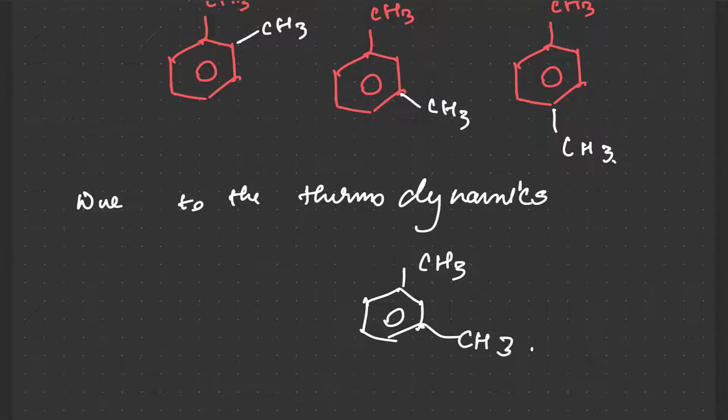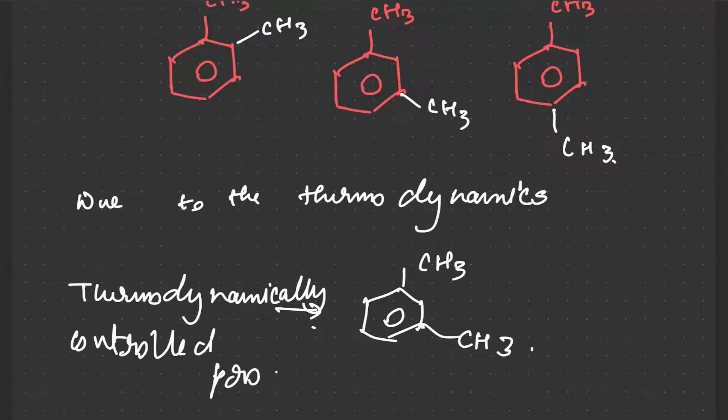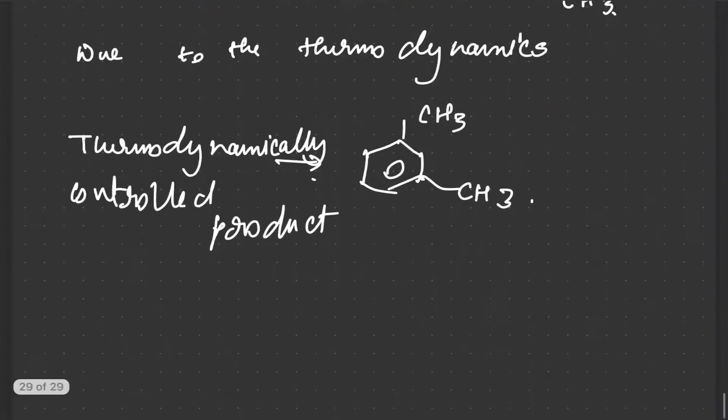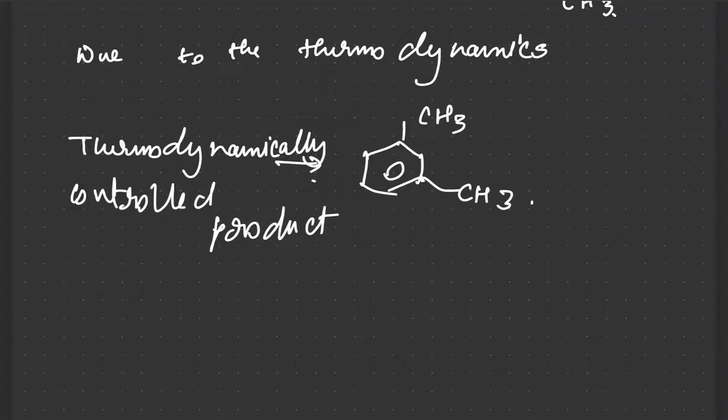This is our major product due to the thermodynamics. This product is known as thermodynamically controlled. So this was a small note and I will tell you the reason as well. The reason for it is hyperconjugation and steric crowding and hyperconjugation, that's the reason.